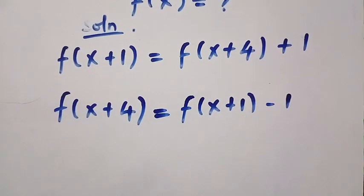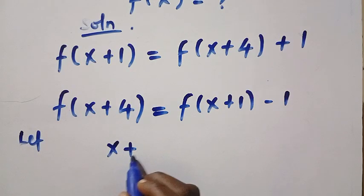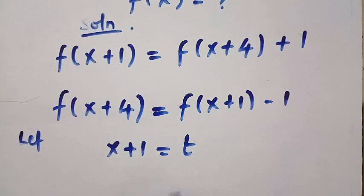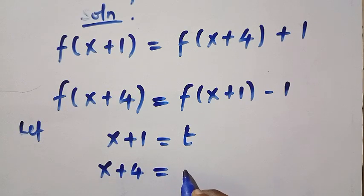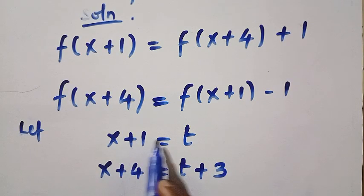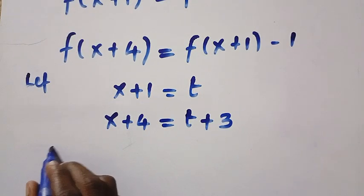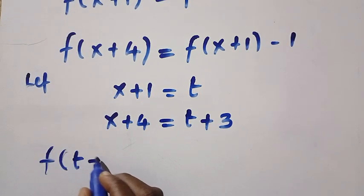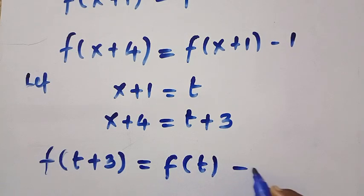Next, if I let x plus 1 equal t, this implies that x plus 4 will equal t plus 3. This is just like adding 3 to both sides. So I'm representing everything with t. We have f of t plus 3 equals f of t minus 1.